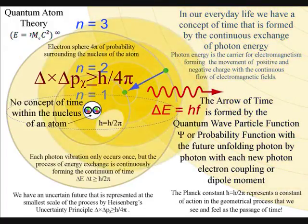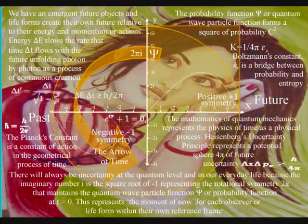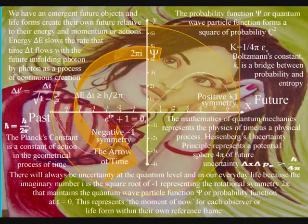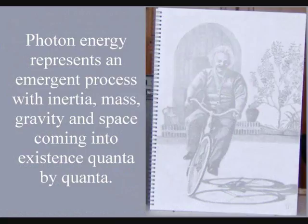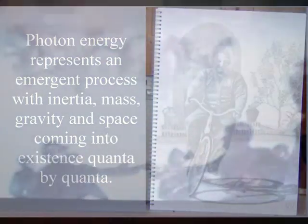Gravity being a property of spacetime itself. This is only possible if photon energy represents an emergent process, with everything within that process being quantized. Not just the energy, but also inertia, mass, gravity and space, would have to be part of an emergent process coming into existence quanta by quanta.